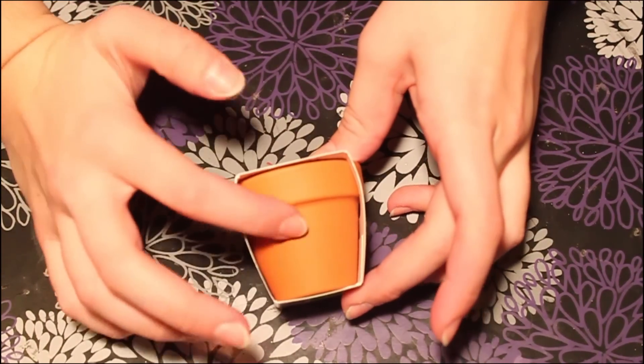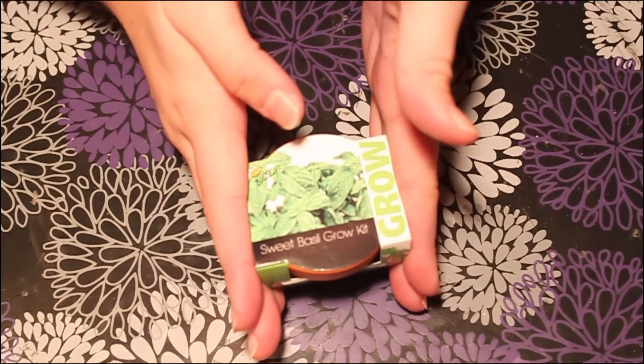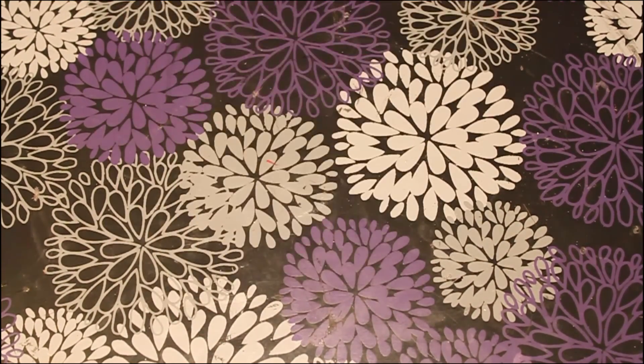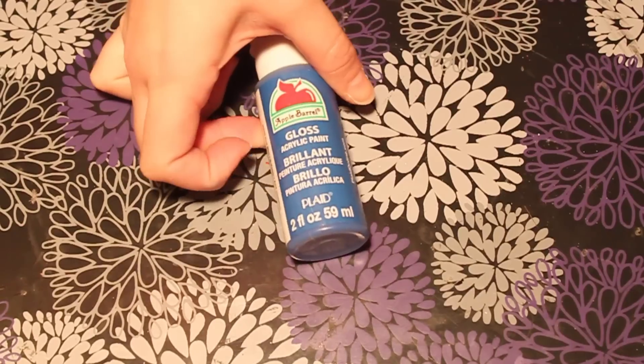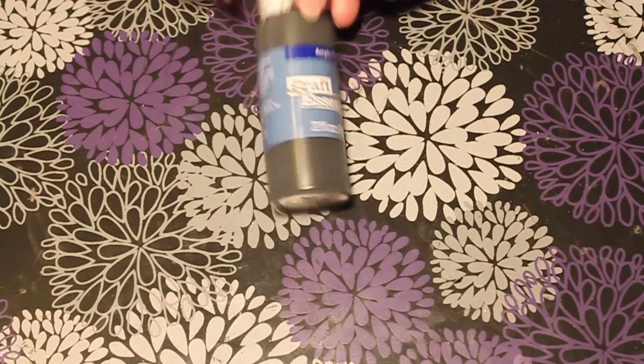So for today's video, you're going to need a little plant pot like this. I got mine at Walmart for 98 cents in the gardening section. Then you're going to need some blue paint, some white paint, some black paint...